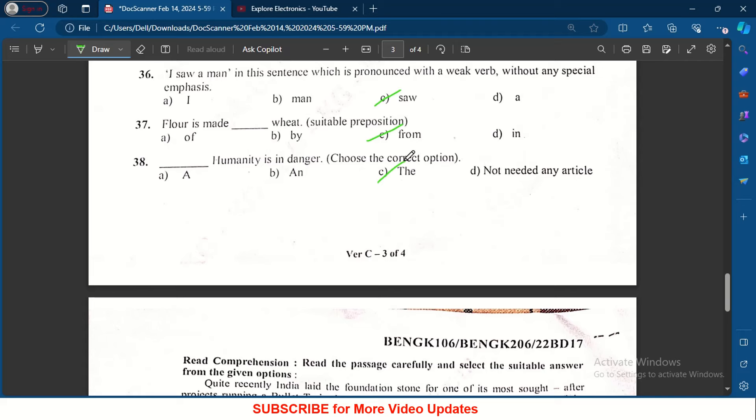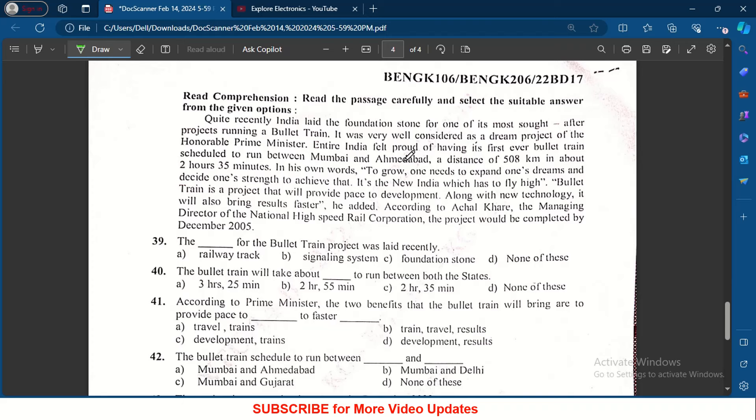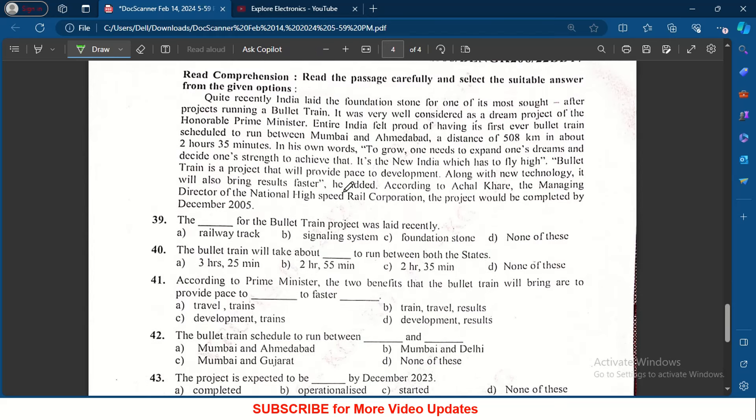Read comprehension: read the passage carefully and select the suitable answer from the given options. Read the comprehension and then we need to answer. The dash for the bullet train project was laid recently. Here it is foundation stone, so foundation stone is the answer.